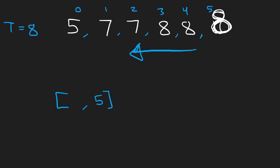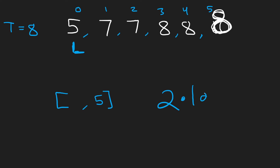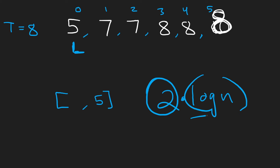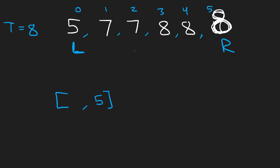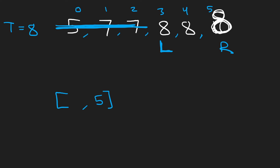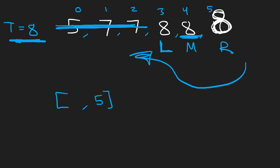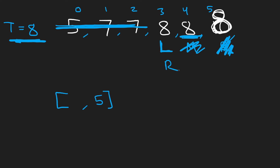Now we look for the leftmost index where eight occurs, and we find it using binary search — so we run binary search twice. We reinitialize our pointers, compute mid as seven which is too small, and shift left over. We recompute mid and find an eight, but since we want the leftmost eight, instead of updating left to mid plus one, we update the right pointer to mid minus one and continue searching to the left. This is the key modification.